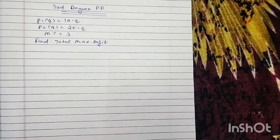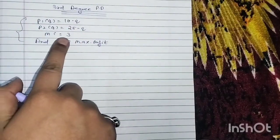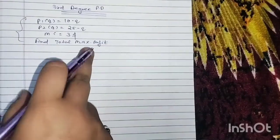For third-degree price discrimination, you are given a question like this: P1(Q) = 10 - Q, P2(Q) = 25 - Q, and your marginal cost is given as $3. So you have to find the maximum profit.